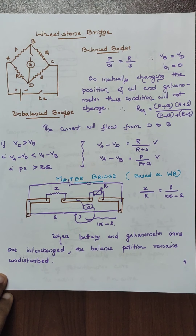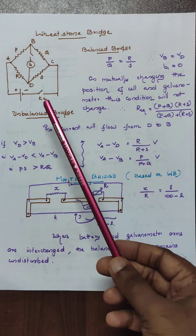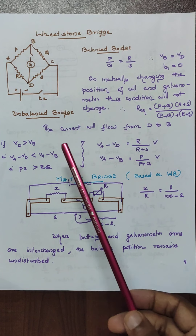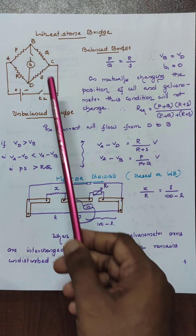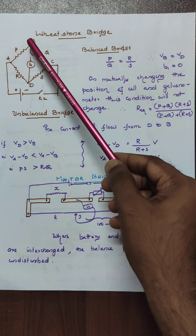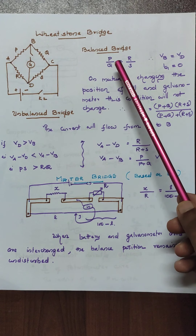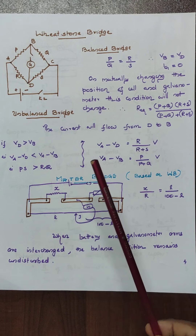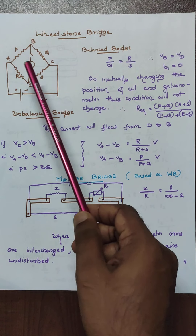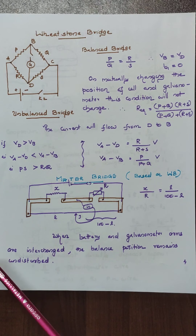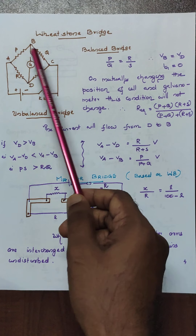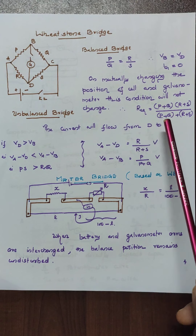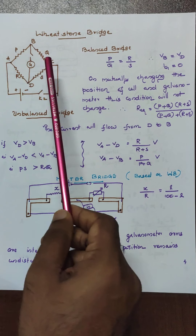The Wheatstone bridge. Look at the circuit — we can find any unknown resistance based on this circuit. You have to consider the balanced bridge and the unbalanced bridge. Under the balanced bridge, the current through the galvanometer G becomes zero, the potential at points B and D become equal, and by solving we get P by Q equal to R by S. An important examination concept: on mutually interchanging G and the cell, there is no change to the balancing condition. The effective resistance of the Wheatstone bridge is P plus Q into R plus S, divided by P plus Q plus R plus S.